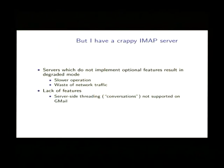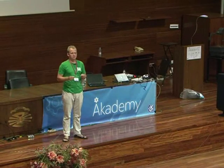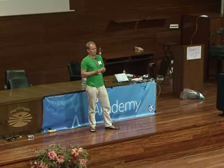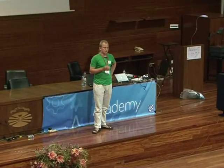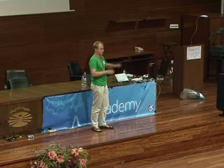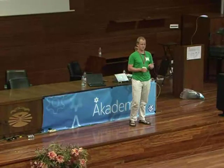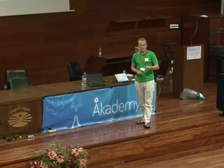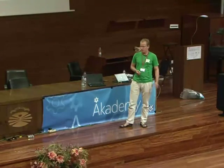There is, of course, a catch with this, and the catch is called crappy IMAP servers. There are actually two sorts of crappy IMAP servers. The first are more or less harmless, because if an operation is just slower or transfers a lot more data, it doesn't really matter. What is a little more annoying are IMAP servers which lack some features. For example, there is Gmail, which unfortunately doesn't really support email threading or conversations — showing messages in threads. The thing is, Gmail actually does support something very similar, but the catch is they are doing this in a non-standard manner. It would be really great to have a new feature in Trojita which would add support for this, but so far nobody's contributed it yet. We are open to accepting contributions.